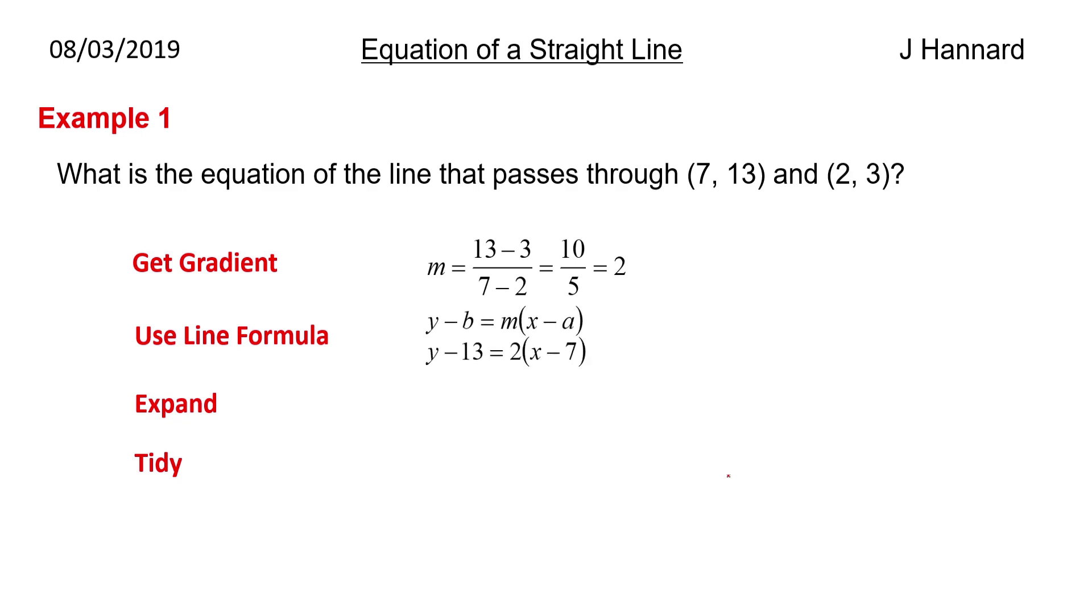We then use our line equation, y minus b equals mx minus a, so we put in the values and you pick any coordinate you want. You can pick (2, 3) or you can pick (7, 13). We just need one point that that line goes through and the gradient of that line. We know the gradient is 2, so free reign over which point you pick from then on. You will get exactly the same answer because remember this line passes through both of these points. We then expand that up, so expand the right hand side and call it 2x minus 14, then we take the 13 over the other side and call it y equals 2x minus 1.